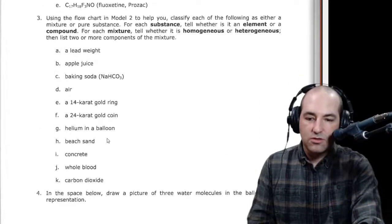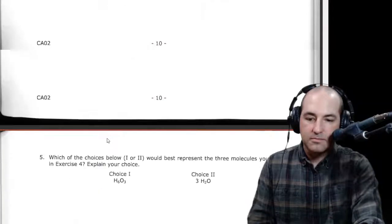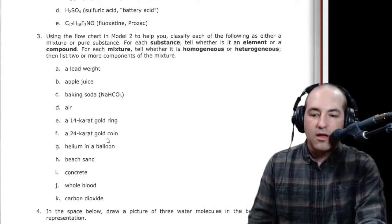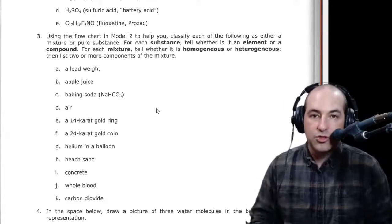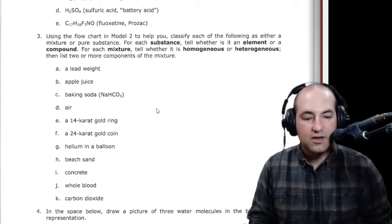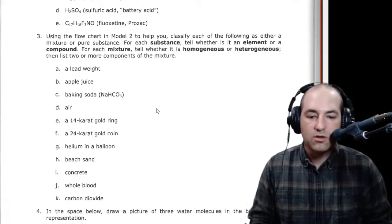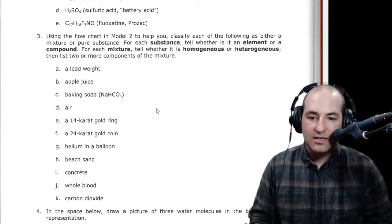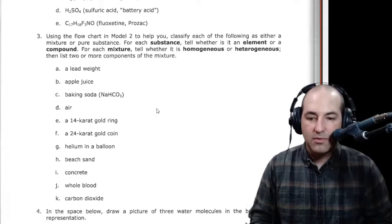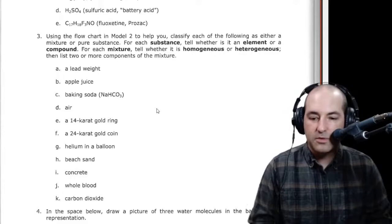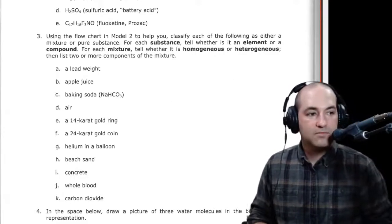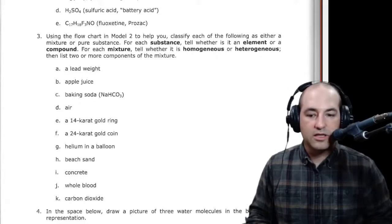And then as we move into number three. This is the kind of thing that I really want you to be able to do when you finish this activity. So I want you to be able to be given some sort of a substance and categorize it either as an element, a compound, a homogeneous mixture, or a heterogeneous mixture. So we're going to do a couple together, and then I'll let you do the others on your own, and I'll talk about a couple that maybe are less clear.